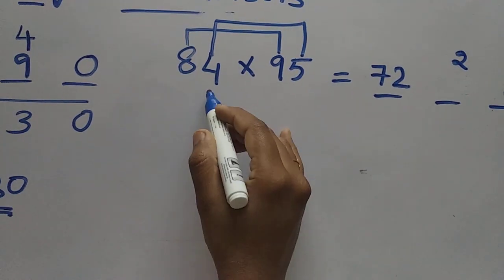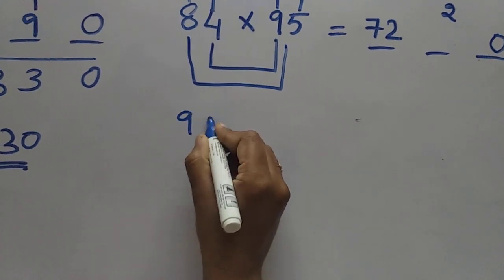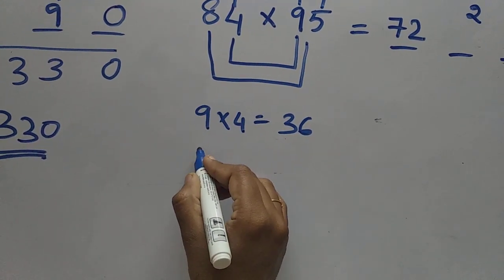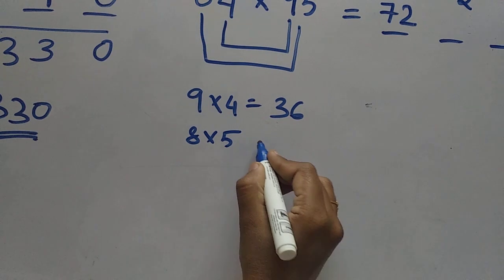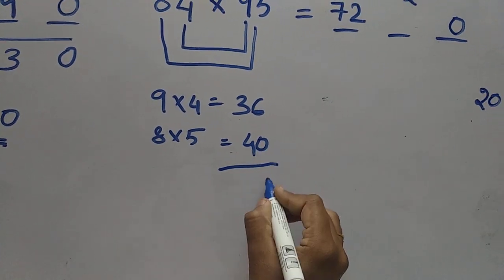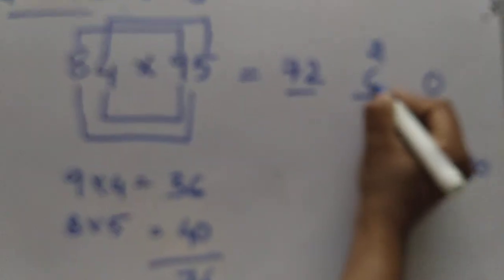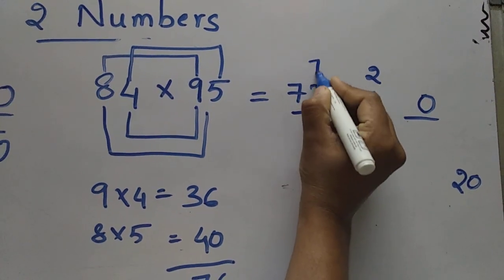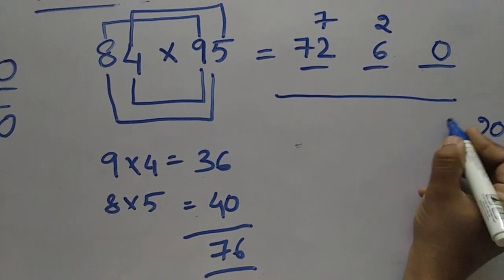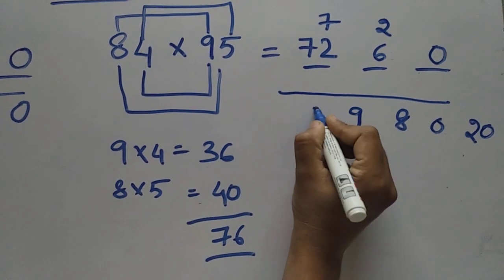After that we can multiply 9 into 4 and 8 into 5. 9 into 4 is 36, and 8 into 5 is 40. After that we can add these 2 numbers — this is 76. For this 76 we can write 6 here and 7 as a carry. After that we can add all numbers: 0, 8, 9, 7.